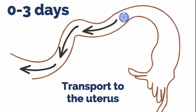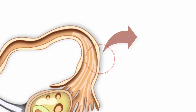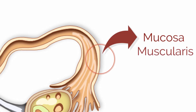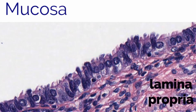The histology of the fallopian tube is unique to accomplish this task. There are three layers to the wall of the fallopian tube: the mucosa, muscularis, and serosa. The mucosa layer is composed of simple columnar epithelium and the lamina propria, which is directly below the mucosa and is made up of connective tissue and a large number of blood vessels.